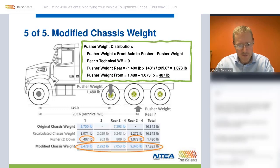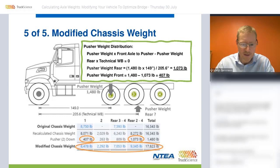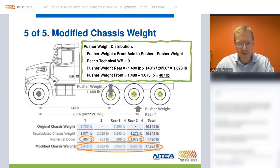Interesting to note: if you look at the value for the front axle, the original chassis weight is 8,750 pounds and the modified chassis weight is 8,478. So adding the pusher axle takes some of the weight off the front axle by imposing load on the road. In fact, the pusher axle carries slightly more than its own weight.